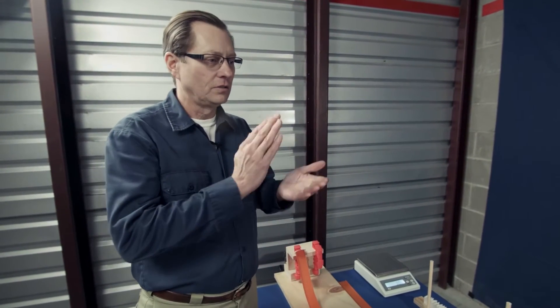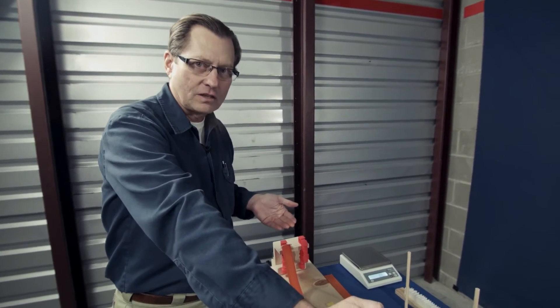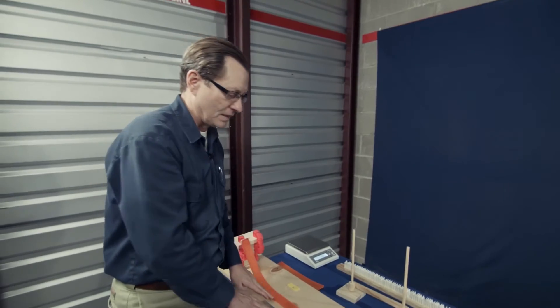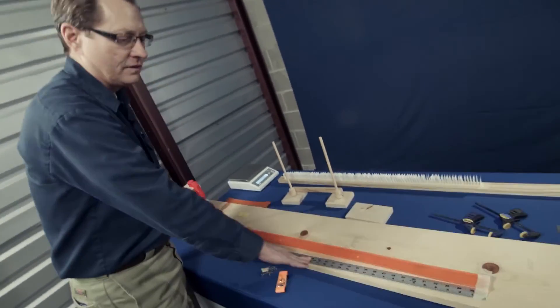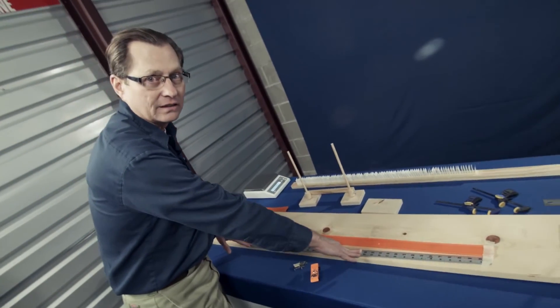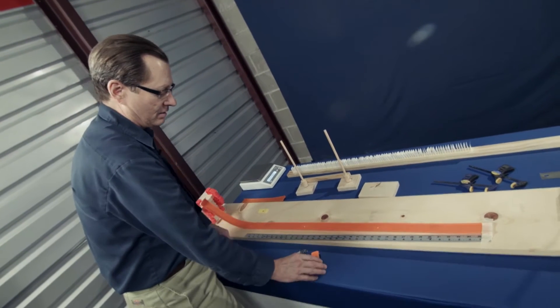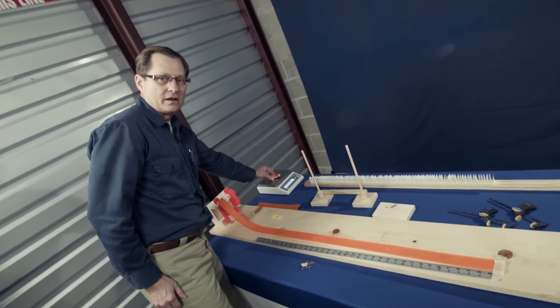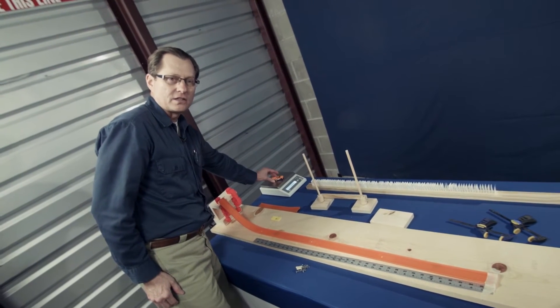We're going to look at how the stopping distance of the car varies with the mass in the car. Stopping distance is a gauge of how much kinetic energy the car had, and we'll know the mass because we're going to measure the mass of the car by weighing it on the mass balance each time we increase the weight.